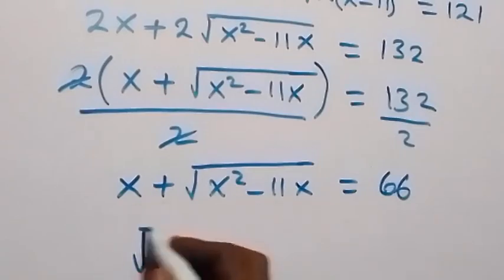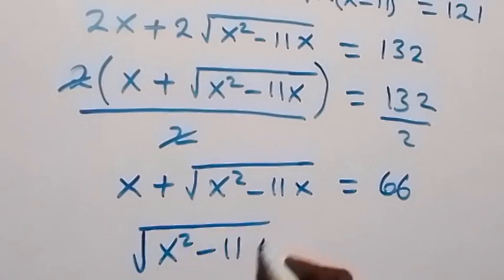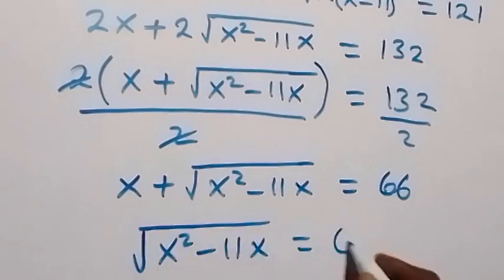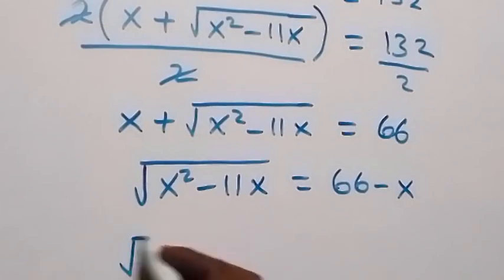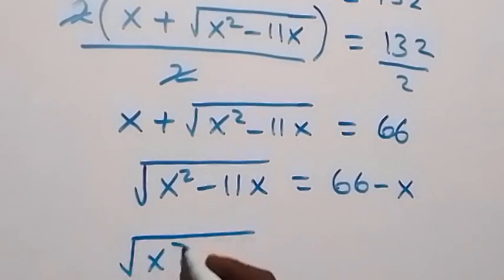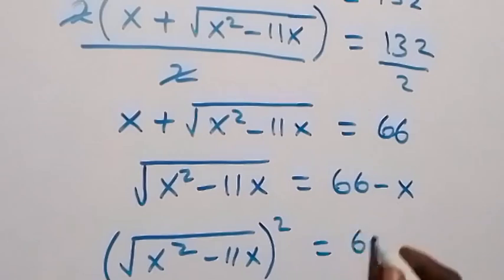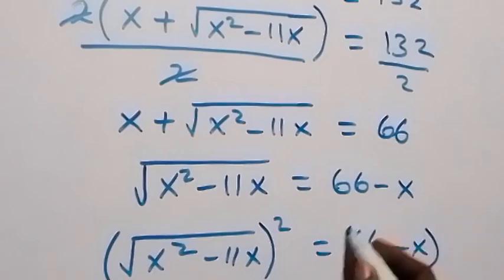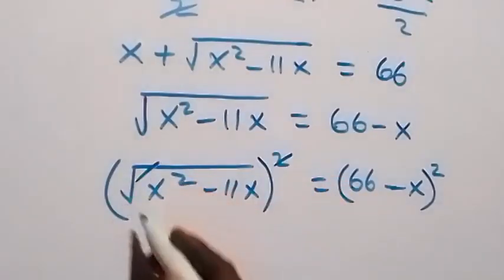Taking x to the other side, root of x squared minus 11x equals 66 minus x. Now we square both sides again: root of x squared minus 11x, all squared, equals 66 minus x, all squared.